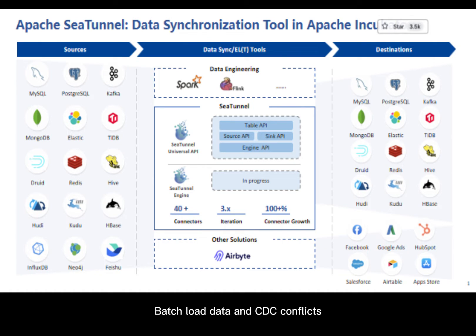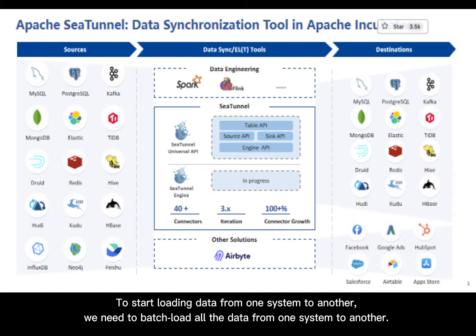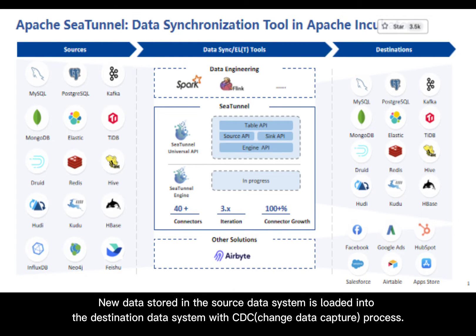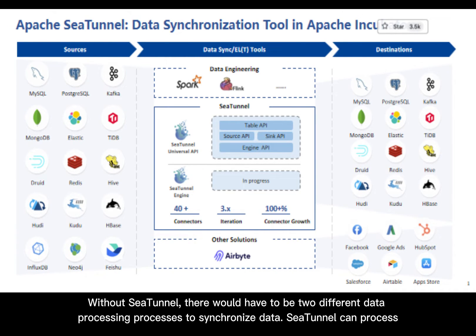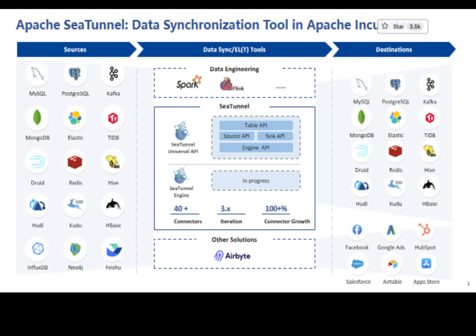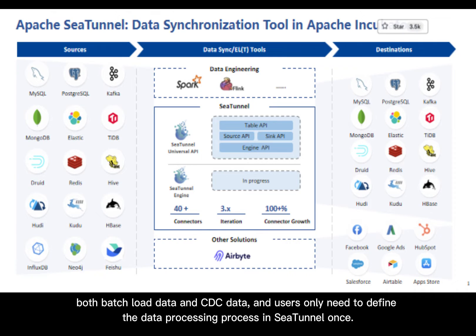Batch load data and CDC conflicts: to start loading data from one system to another, we need to batch load all the data first. New data stored in the source system is then loaded into the destination using CDC (change data capture). Without C-Tunnel, there would need to be two different data processing processes. C-Tunnel can process both batch load data and CDC data, and users only need to define the data processing process once.